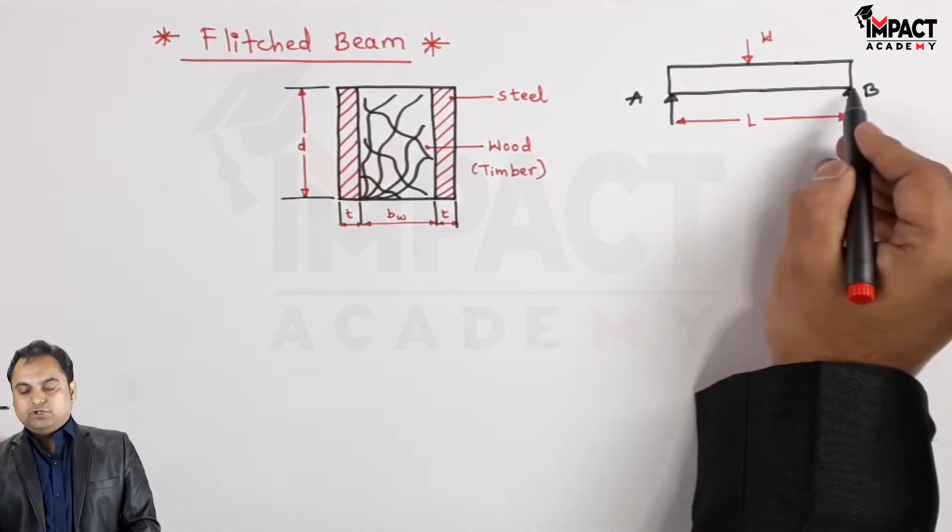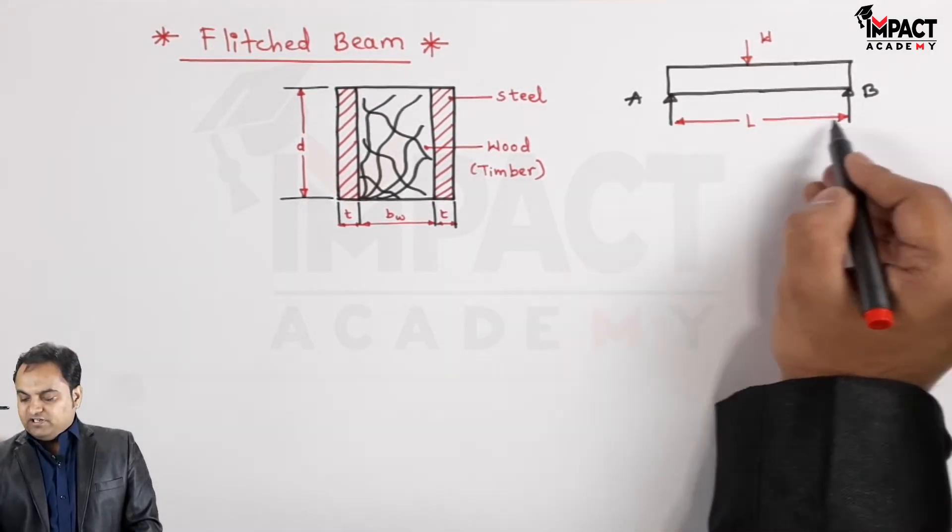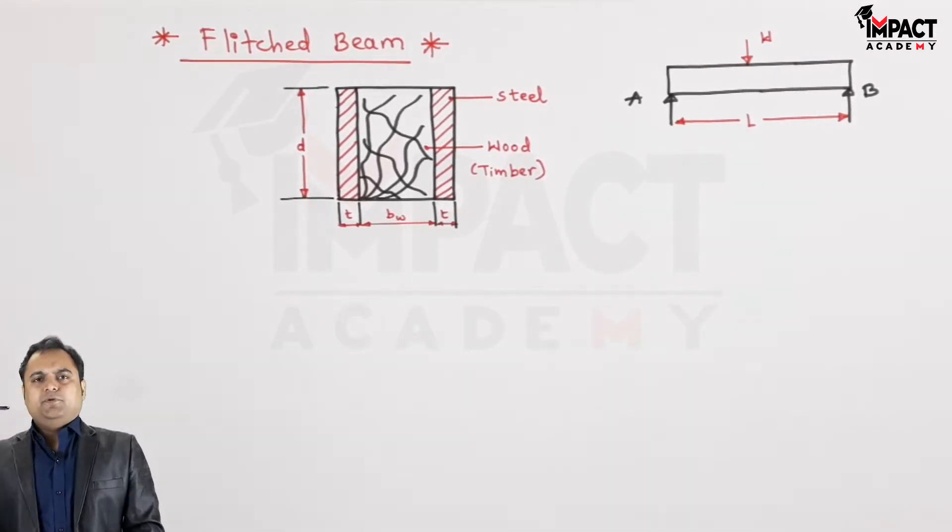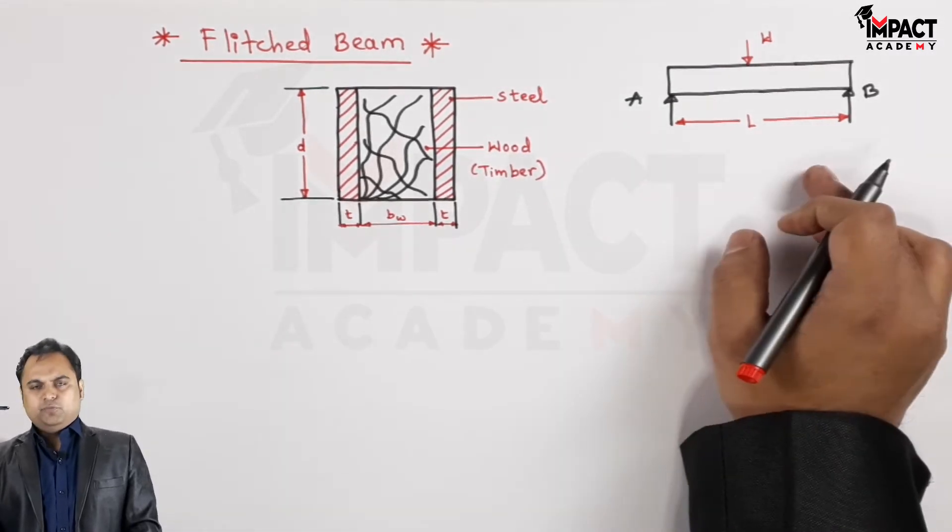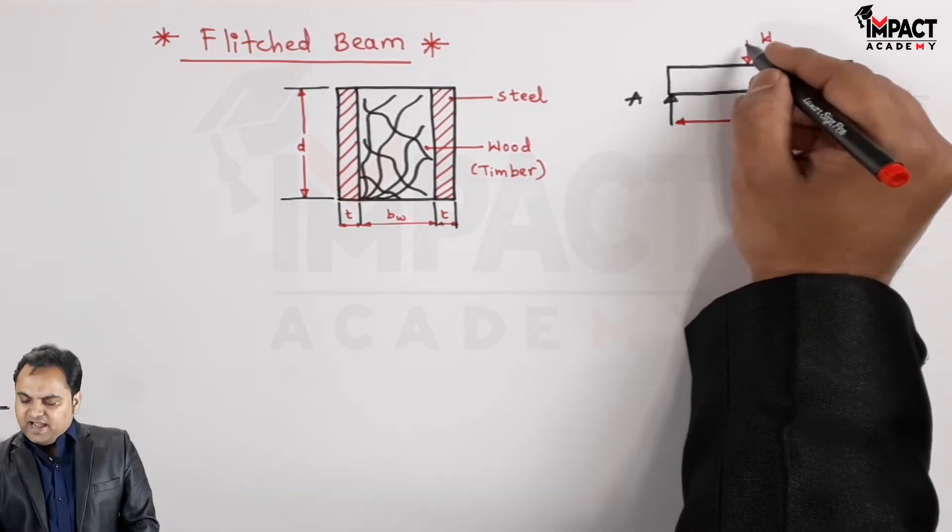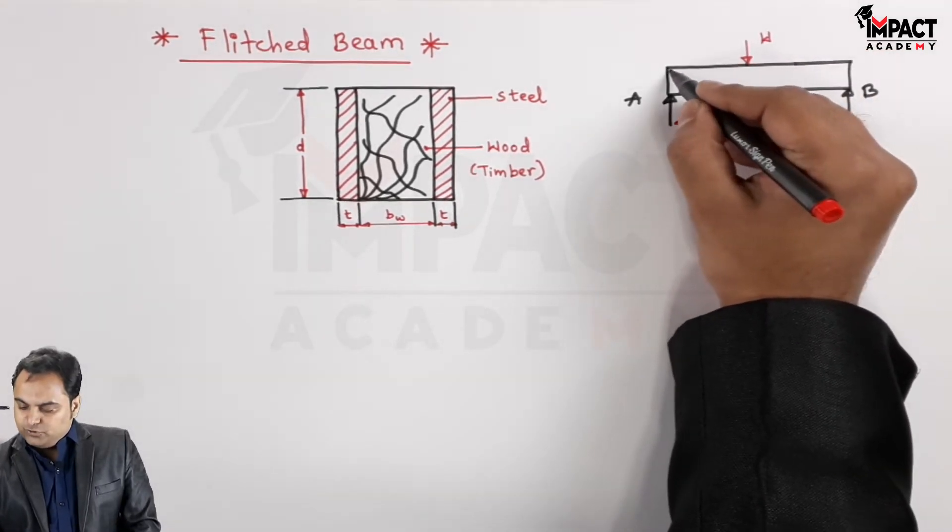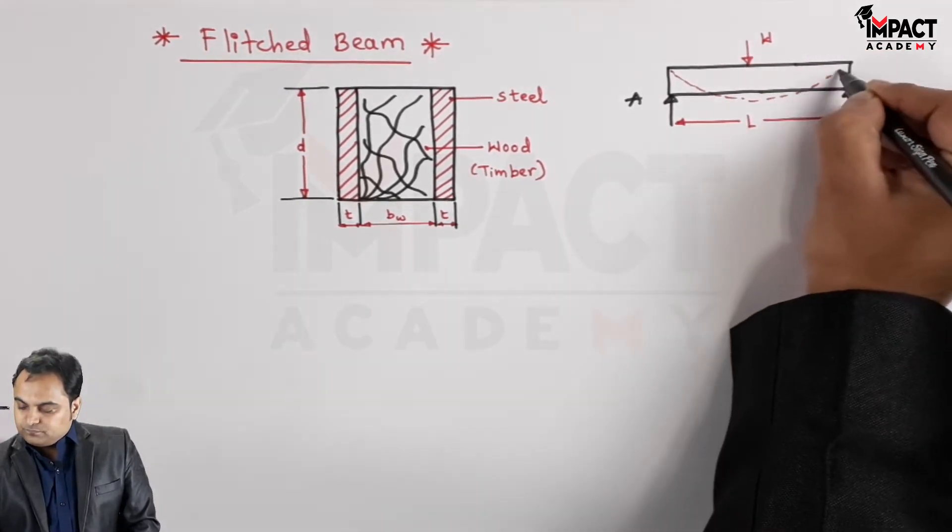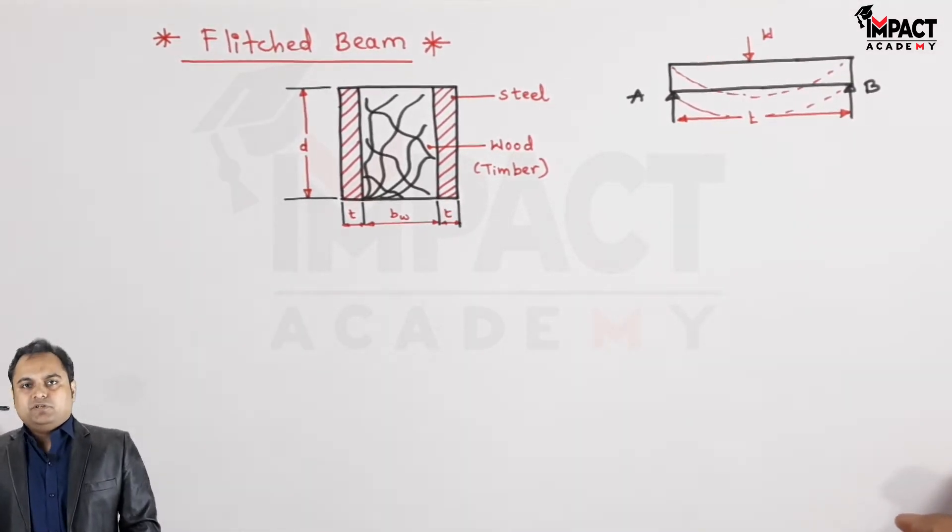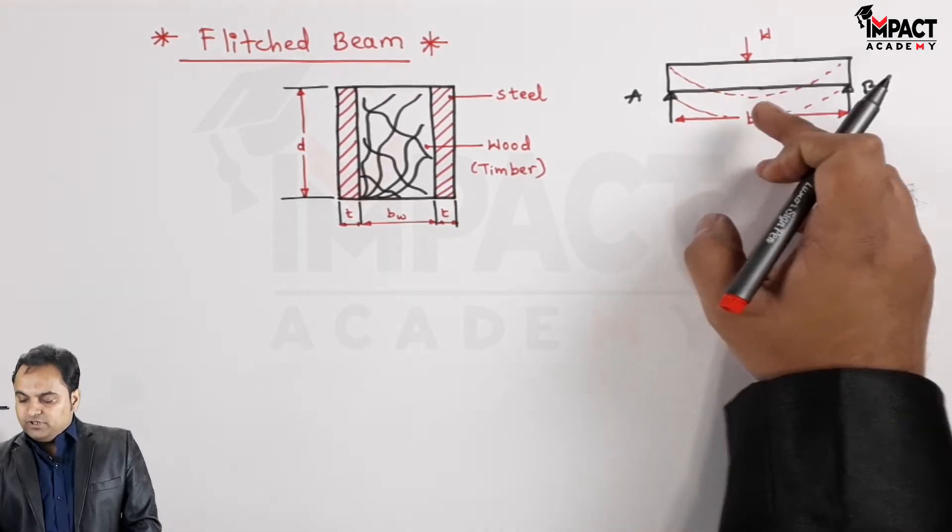Now, beam is a horizontal member having length L, supported at A and B, just for an example. The supports may be of different types, like it can be supported at one end and free at the other, as we call it a cantilever beam. Here I am assuming an example of a simply supported beam. Under the action of this load, this beam is going to bend, and if a single material is used, then the resistance offered by the beam would be less.